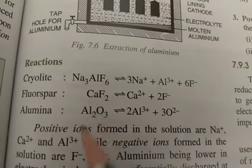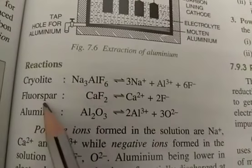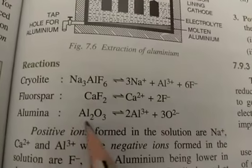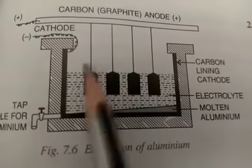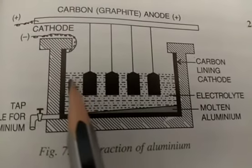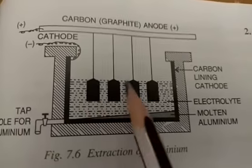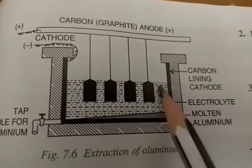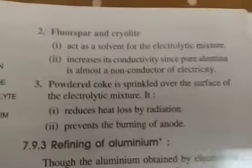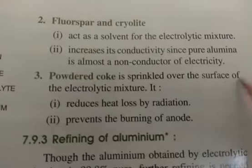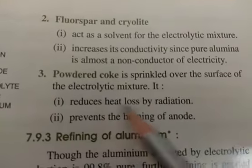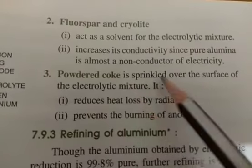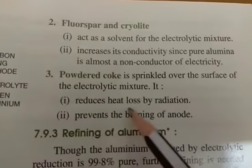Cryolite as well as fluorspar act as solvents for the electrolytic mixture and also act as good conductors. Above the molten electrolyte, powdered coke (carbon) is also sprinkled over the surface. The reason for sprinkling powdered coke is that it reduces the heat loss by radiation.